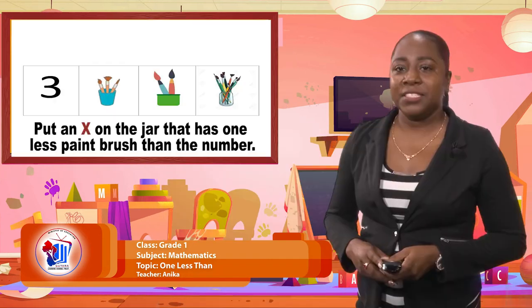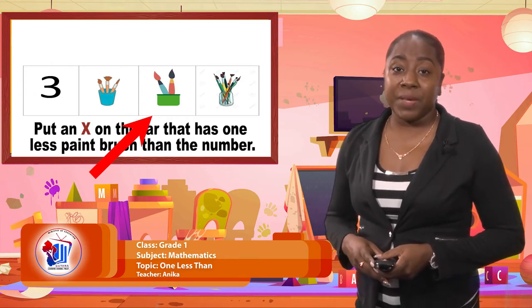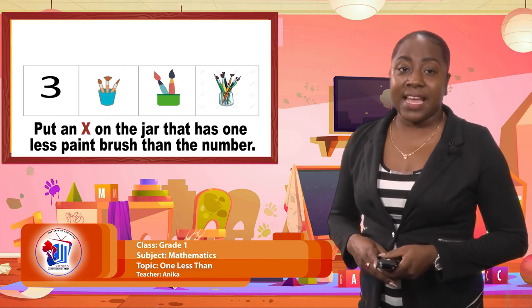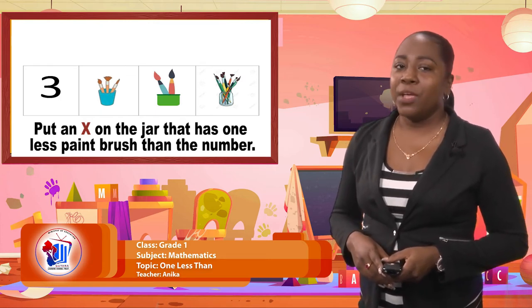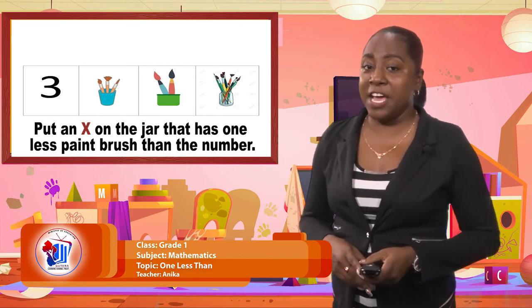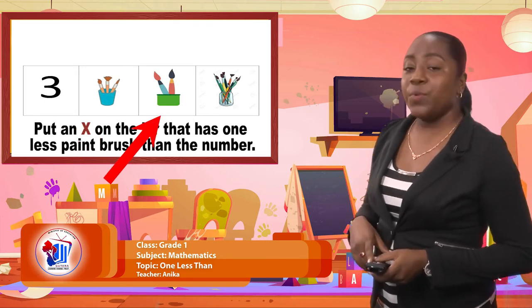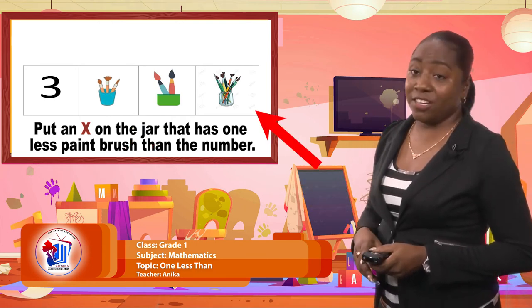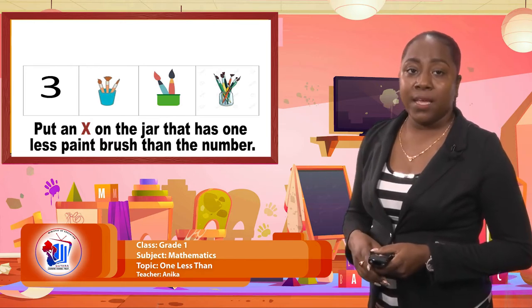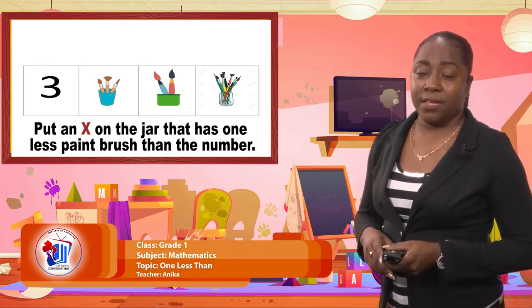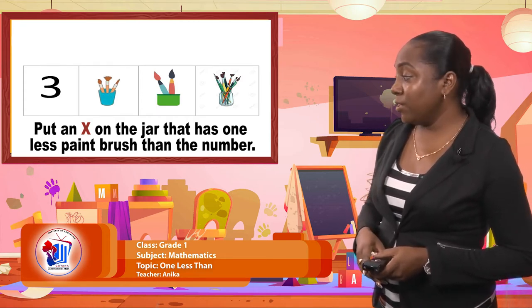We're going to look at another one. On the screen you will see the number three and then we have jars with paint brushes. I would like you to put an X or identify which jar has one less paint brush than the number. In the blue jar we have three brushes. In the green jar we have two brushes. And in the clear jar we have seven brushes. So which one would be one less than the number three? I'll give you five seconds to figure it out and then I'm going to reveal the answer.